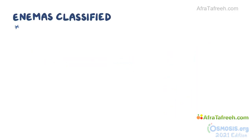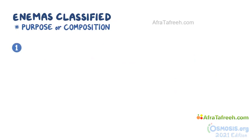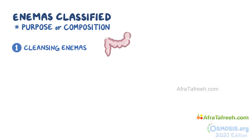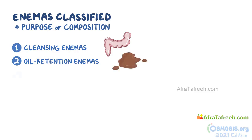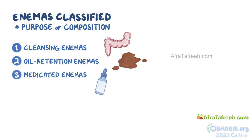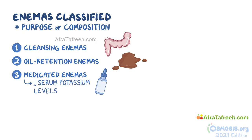Enemas can be classified depending on their purpose or their composition. In the first category, there are cleansing enemas, which are used to clean the colon of feces entirely. Then there are oil retention enemas, which are lubricating enemas that soften the feces to make them easier to eliminate. Third, there are medicated enemas, which contain medication prescribed for a variety of reasons, like lowering serum potassium levels.